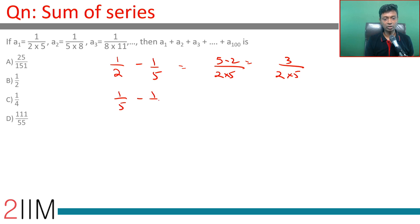1 by 5 minus 1 by 8, that's 5 into 8, 8 minus 5, this is 3 by 5 into 8. One third of this will be one third of this, which is 1 by 2 into 5. One third of this will be 1 by 5 into 8.